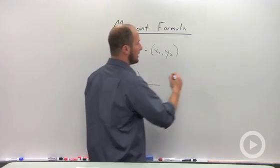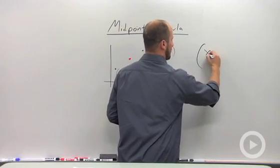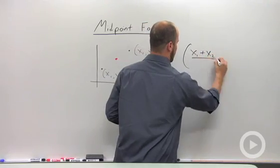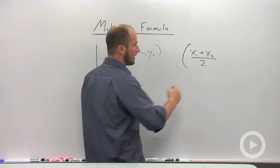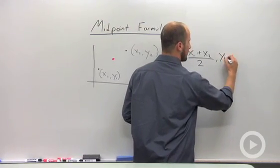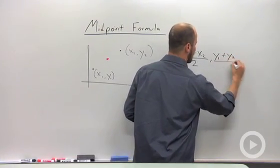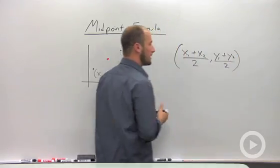So all we do is average the x values, add them together, divide by two, and do the same for the y's. Add the y's together, divide by two.